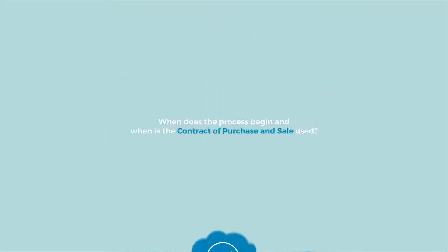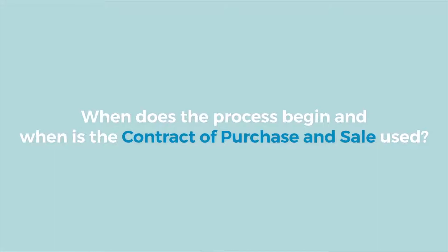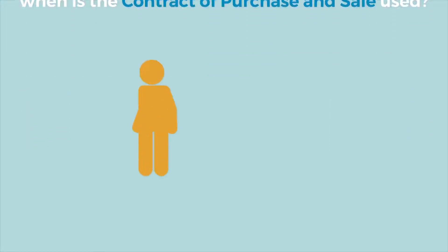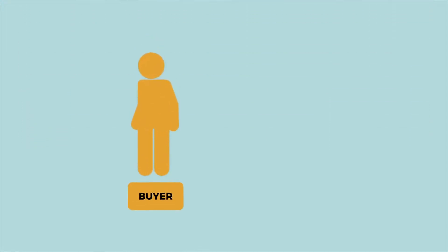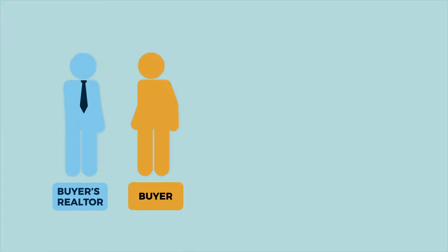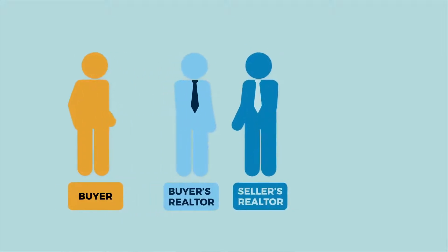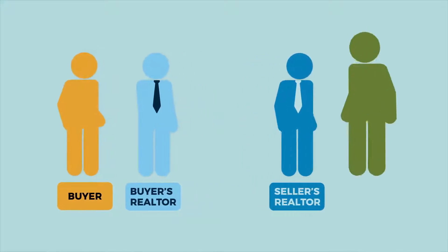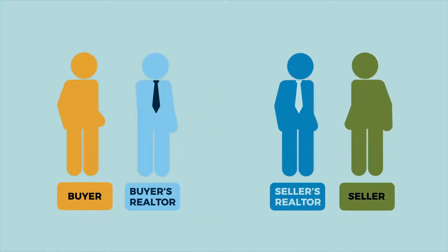When does the process begin and when is the contract of purchase and sale used? The process begins with a negotiation of the contract terms, which typically starts when a buyer makes an offer to the seller to purchase the property. Usually the buyer's realtor prepares an offer on behalf of the buyer using the contract of purchase and sale, and once signed by the buyer, it is presented to the seller.